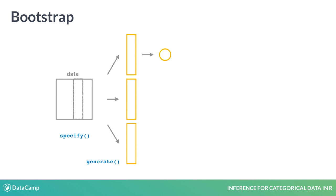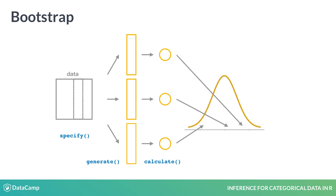We do this many times to create many bootstrap replicate datasets — this is done with generate. Next, for each replicate, we calculate the sample statistic, in this case the proportion of respondents that said happy. This is the role of calculate. I'd like to save this object — the collection of statistics from repeated resampling of our dataset. From there, we can look at their distribution using ggplot. This is called the bootstrap distribution. The standard deviation of this distribution is a good estimate of the standard error, so our last step is to extract that using summarize.